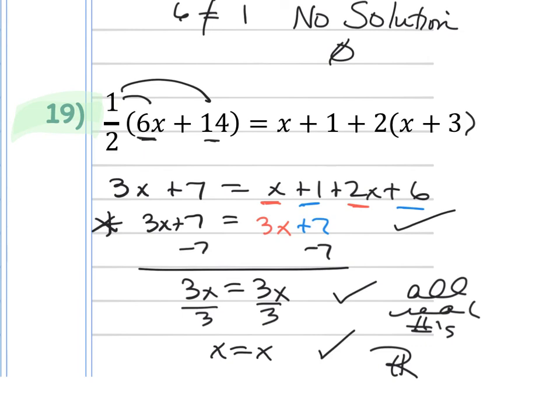This is a review of Algebra 1 and solving for a single variable, with two exceptions: if the variables cancel and you're left with a true statement, it's all real numbers; if the variables cancel and you're left with a false statement, it's no solution. This was the introduction to Section 1.2 — there's more information still to cover in 1.2, which will be the 1.2B notes.